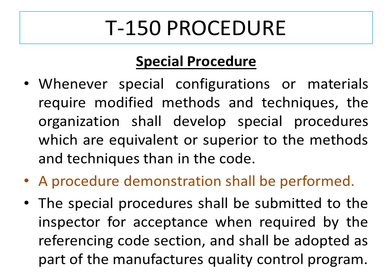Special procedure: whenever special configurations or materials require modified methods and techniques, the organization shall develop special procedures which are equivalent or superior to the methods and techniques in the code. A procedure demonstration shall be performed for such developed procedures. The special procedures shall be submitted to the inspector for acceptance when required by the referencing code section, and shall be adopted as part of the manufacturer's quality control program. Note: the written procedure is not required to be approved by the inspector, but for special examination procedures, approval from the inspector is needed if it is mentioned in the referencing code section. In both cases, procedure demonstration is needed.